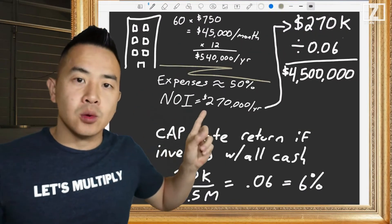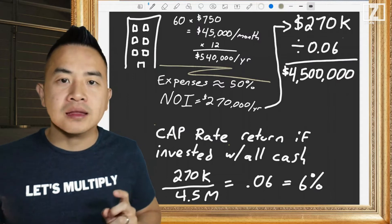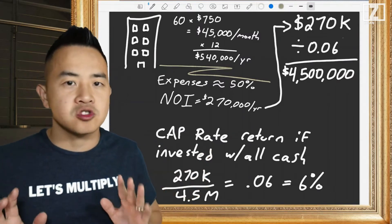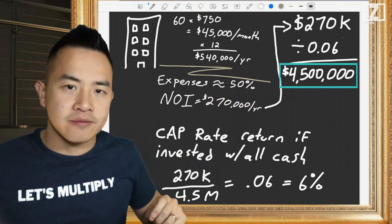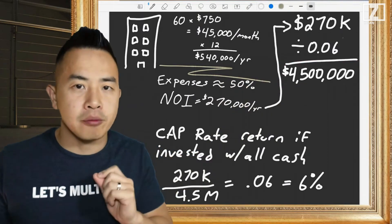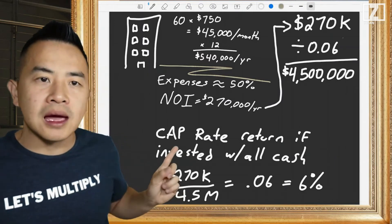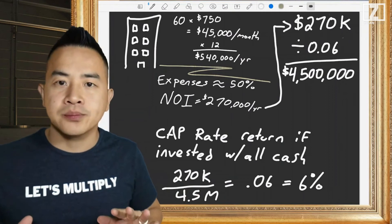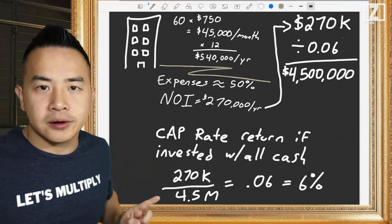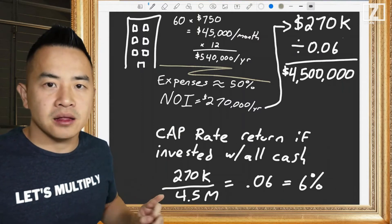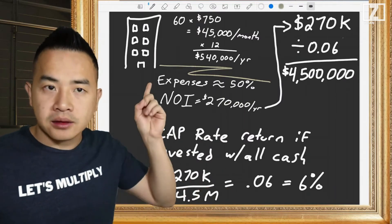If we were trying to buy this building that produced an NOI of $270,000 per year, the question is: how much do we pay? That's where cap rate comes in. Cap rate is super confusing so let me break it down. The value of the building is $4.5 million — that's what we'd be buying it for if the cap rate is at 6%. The cap rate is the return if you are invested with all cash. Take the $270,000 NOI and divide it by the $4.5 million; that equals 0.06, which equals 6%.